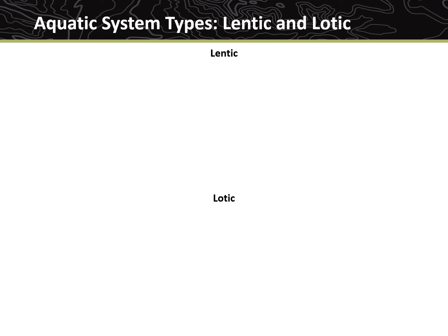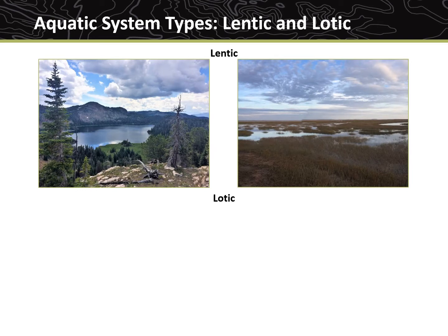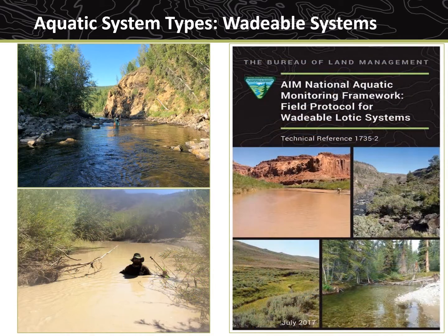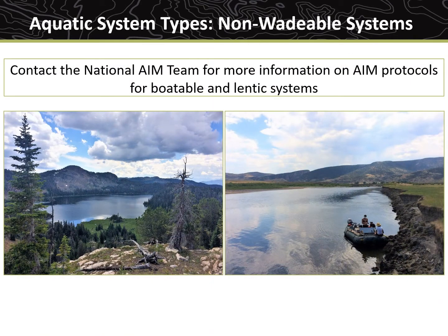The BLM monitors the health of two types of freshwater surface systems: Lentic and Lotic. Lentic systems are defined areas that support riparian vegetation and often have surface water, but do not have enough flowing water or energy to form a channel. These are systems such as lakes, wetlands, and meadows. Lotic systems, such as streams and rivers, contain flowing water with enough energy to form a defined channel and transport sediment. The Lotic AIM protocol covered in these videos, Technical Reference 1735-2, is focused on sampling wadeable Lotic systems. For more information on how to sample other systems, such as Lentic or those that require a boat, please contact the National AIM team.